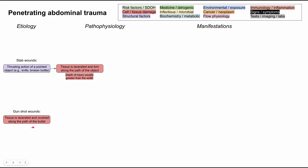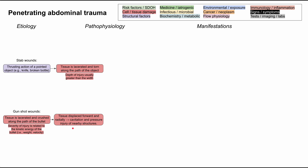In a gunshot wound, you have tissue laceration and tissue being crushed along the path of the bullet. The severity of injury is related to the kinetic energy of the bullet, computed as one half mv squared — m is the mass (weight of the bullet) and v is the velocity (speed of the bullet). Both contribute to damage. Tissue is displaced forward and radially, causing cavitation and pressure injury of nearby structures. More dense structures like the liver and bone absorb more kinetic energy and have more injury, compared to less dense structures like fat or skin.